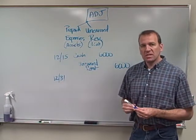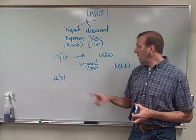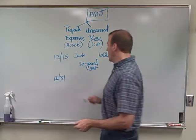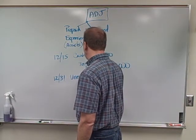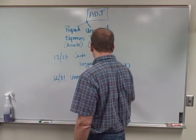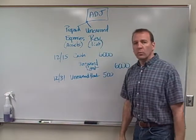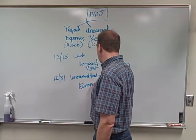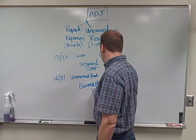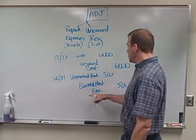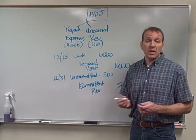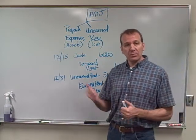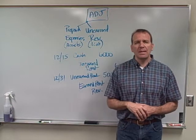Have we earned some of this money? Well, we've earned a thousand dollars a month, but we started on the 15th, so we've earned half a month — we've earned $500. So what we're going to do is reduce our unearned rent, and what we're going to credit is earned rent revenue. A credit to that revenue account increases it, so we've recognized revenue.